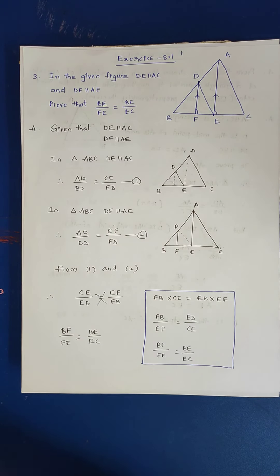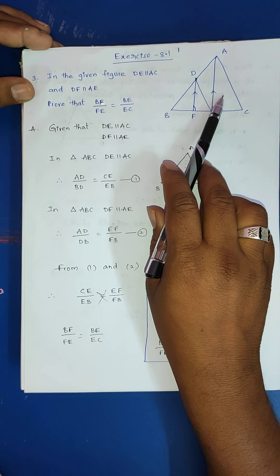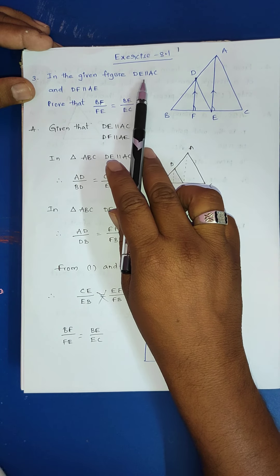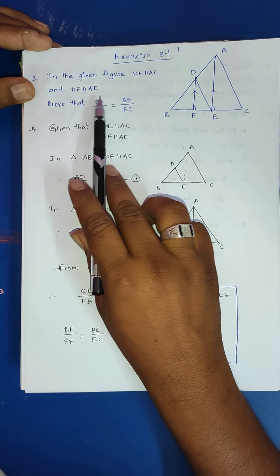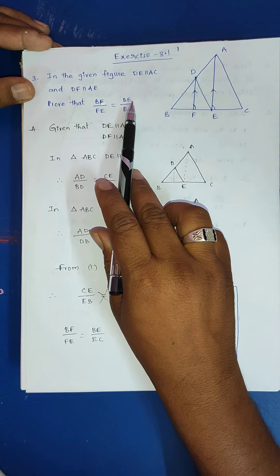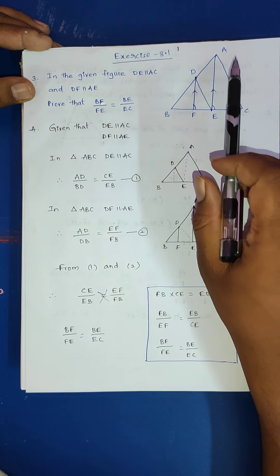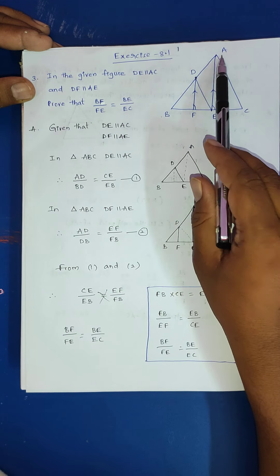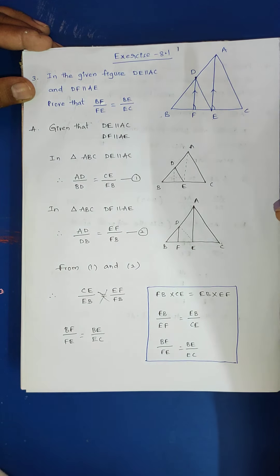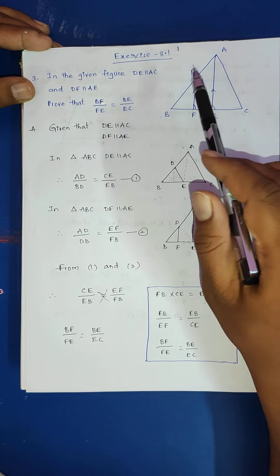Next, third problem. In the given figure, DE is parallel to AC and DF is parallel to AE. Prove that BF by FE is equal to BE by EC. This is triangle ABC. Triangle ABE is another triangle, and triangle AEC is another triangle. Many triangles are formed here.